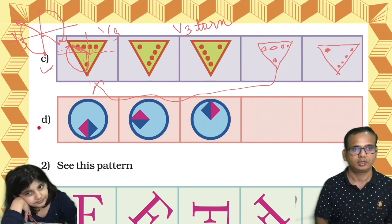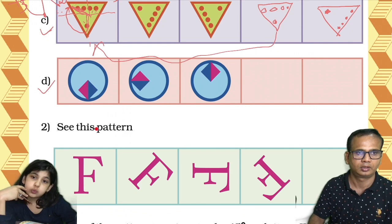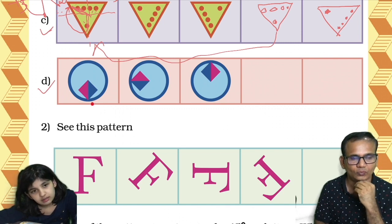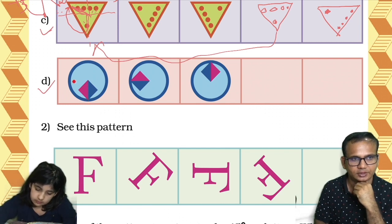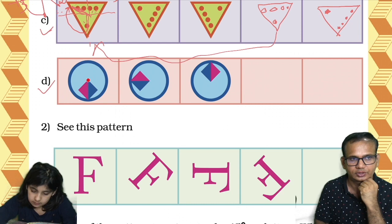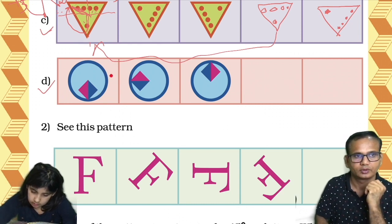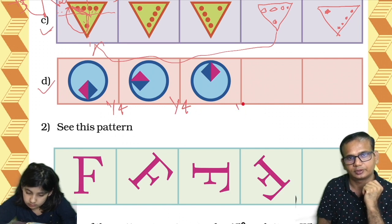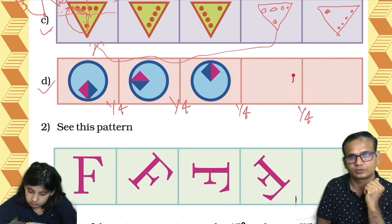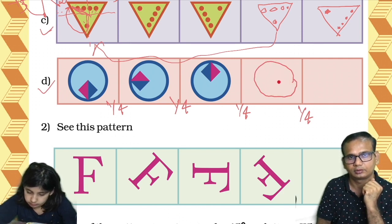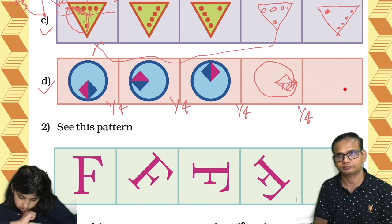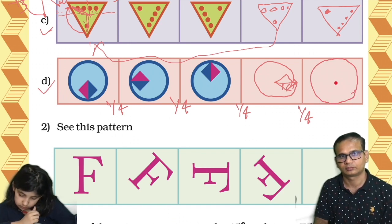Let's do D1 now. Just do quarter turn. See this one — first it was here, then it was here, and then it is here. So it is turning one-by-fourth. It is simple. Here we can say one-fourth turn, here also one-fourth turn, here also one-fourth turn, here also one-fourth turn. So if you draw a circle here and then one-fourth turn, we can make it like this. This one and this one will be the same.